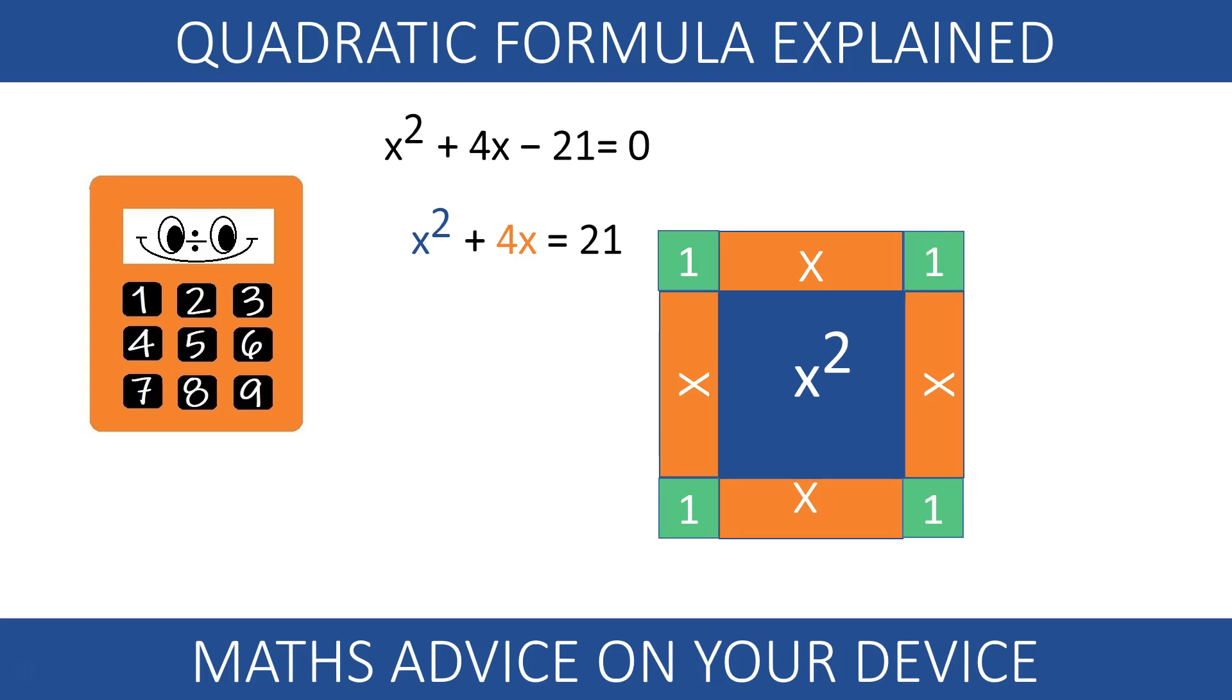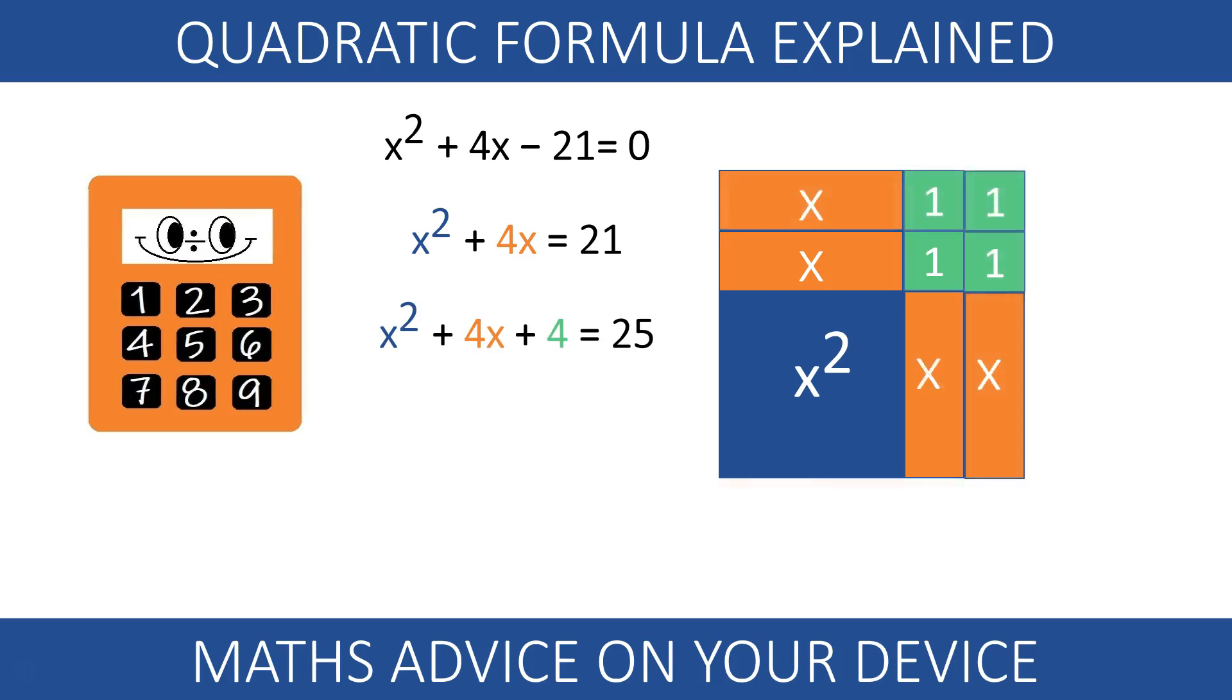We know then that x squared plus 4x plus 4 equals 25. Rearranging the rectangles and squares, we see that the area is the same than the area of a square with sides x plus 2.